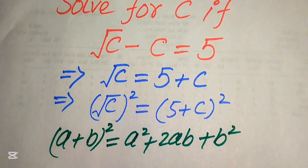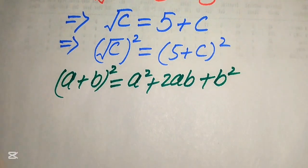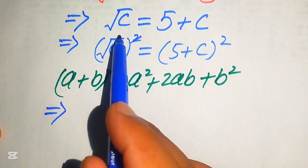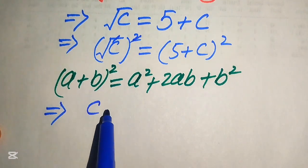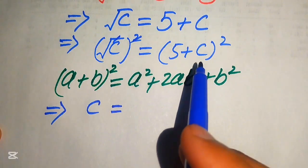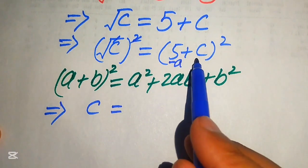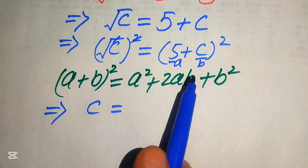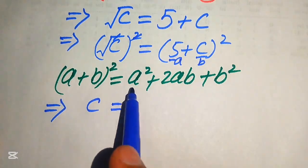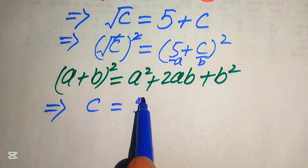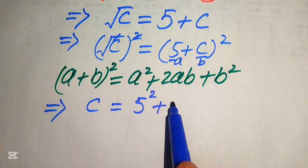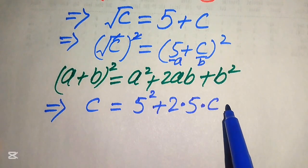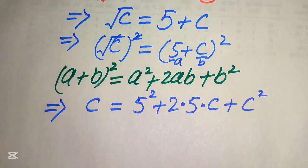According to this formula applied on the right hand side, the square root cancels on the left and we get c equals to the expanded form. Here our a equals to 5 and our b equals to c. So according to this formula we expand: a squared gives 5 squared, plus 2 times a times b gives 2 times 5 times c, plus b squared gives c squared.